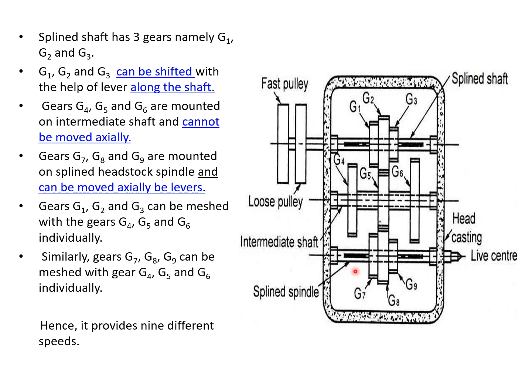Now, here, G1, G2, and G3 can mesh with G4, G5, and G6 individually. Similarly, here, G7, G8, and G9 can mesh with gears G4, G5, and G6 individually. Hence, it provides nine different speeds.